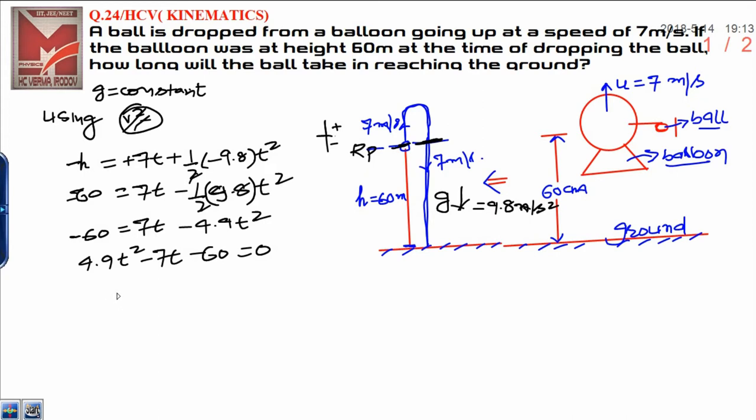Now you have to solve it simply. You can solve by the quadratic formula: t is equal to minus b, that is 7, plus minus. Here you need to calculate b squared, that is 49 plus 4 times 4.9 times 60. Here 4.9 into 60, 24 into 49, you should solve here. 24 into 49 is 1176.